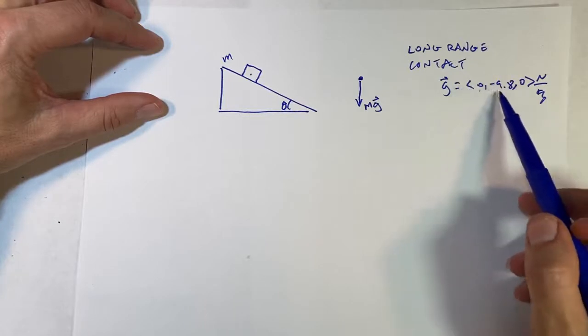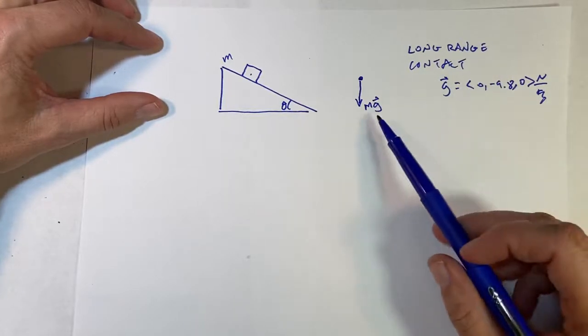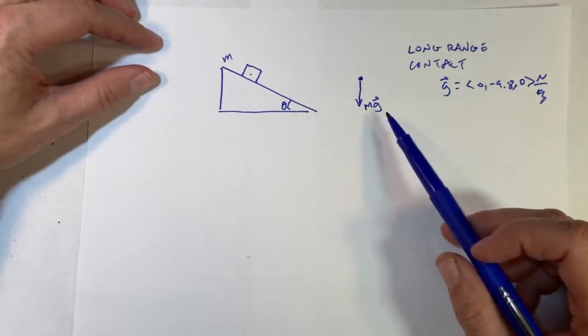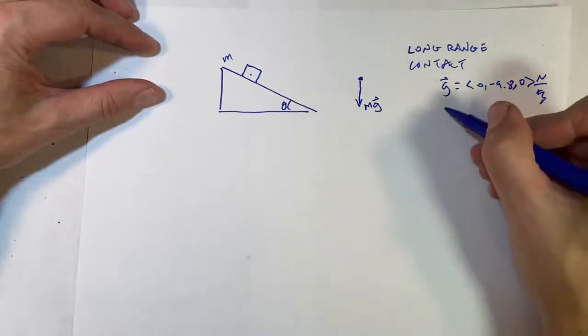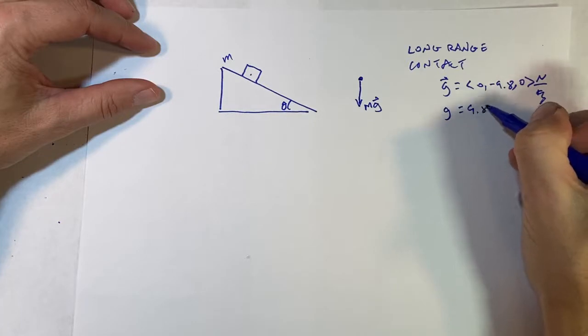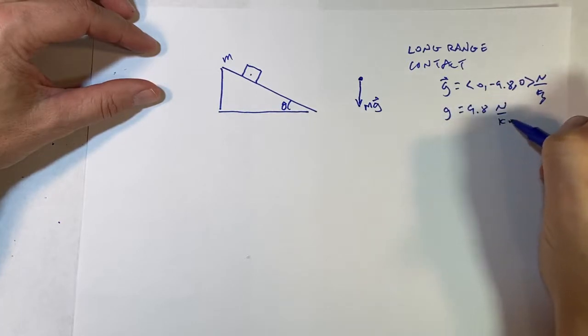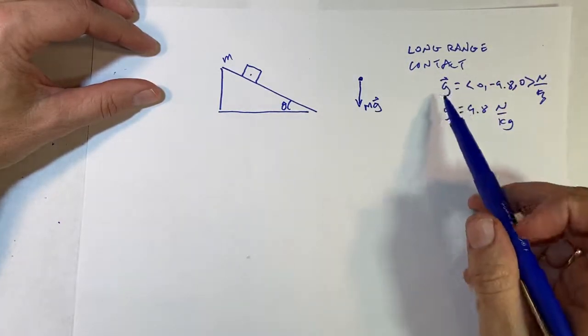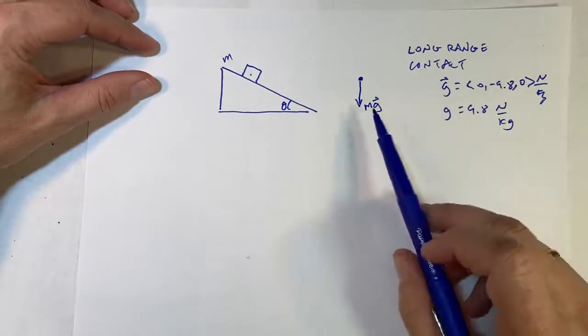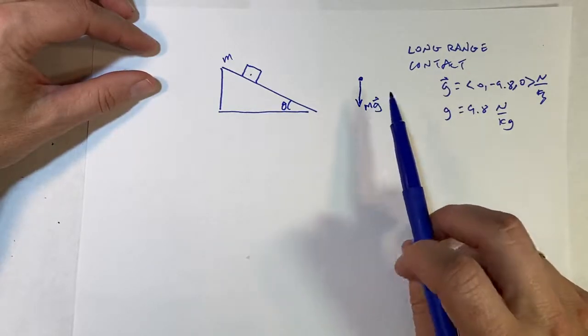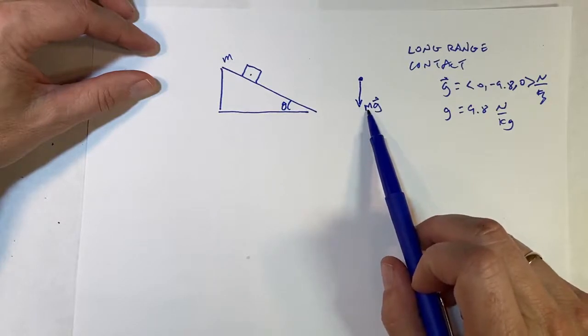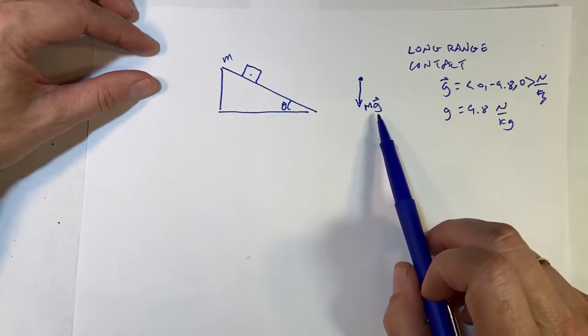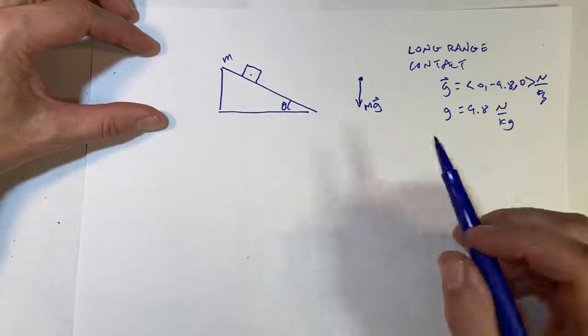Where g is the vector 0, negative 9.80 newtons per kilogram. So remember, this has a negative y component. We don't say the vector g is negative. And if I do write g all by itself, then I say g equals 9.8 newtons per kilogram. It's the magnitude of that vector. So magnitudes are positive. Okay. So in this case, the gravitational interaction with the earth, the earth doesn't have to touch it. It's a product of the object's mass and g, which is due to the earth and the distance from the center of the earth.